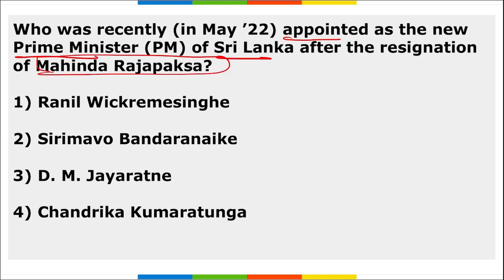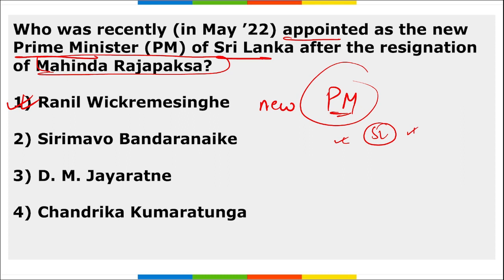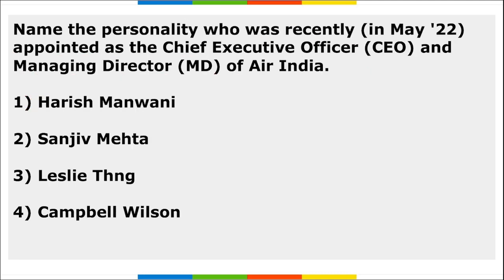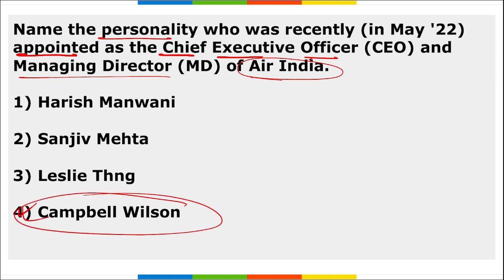After the resignation of Mahinda Rajapaksa, Ranil Wickremesinghe was appointed as the new Prime Minister of Sri Lanka amidst a severe economic crisis. Campbell Wilson was appointed as the Chief Executive Officer and Managing Director of Air India.